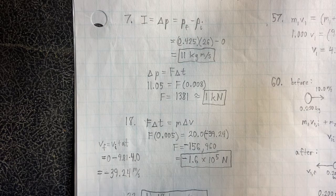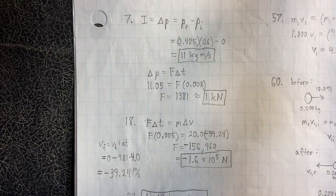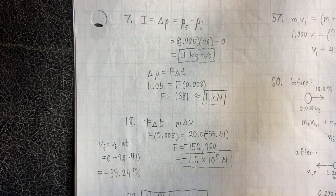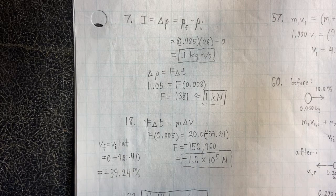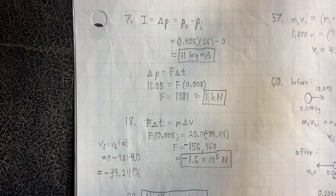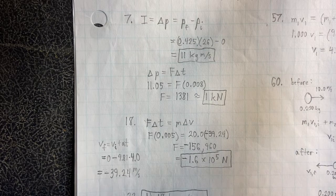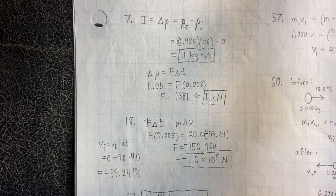So we just plug in the time and get negative 39.24 meters per second. This is what we were able to plug into our delta V. The final velocity is delta V because that's how much the velocity has changed from rest to the given velocity.